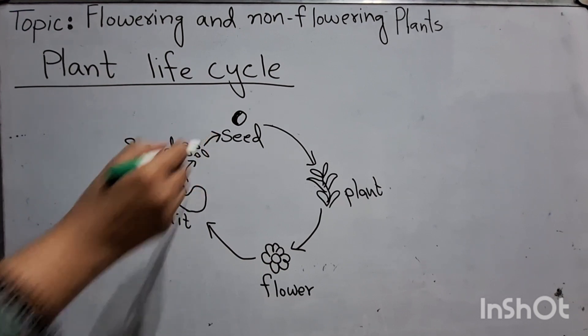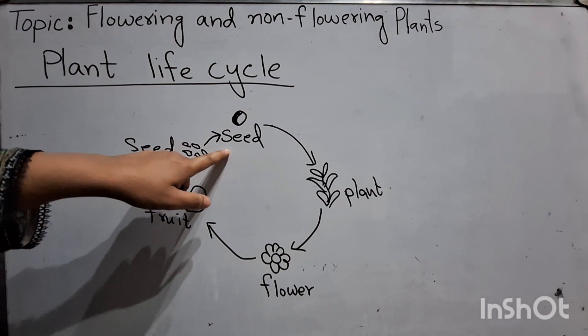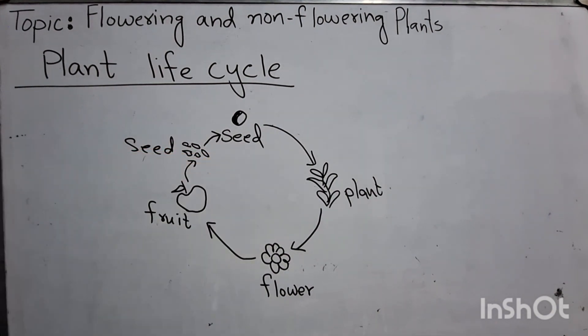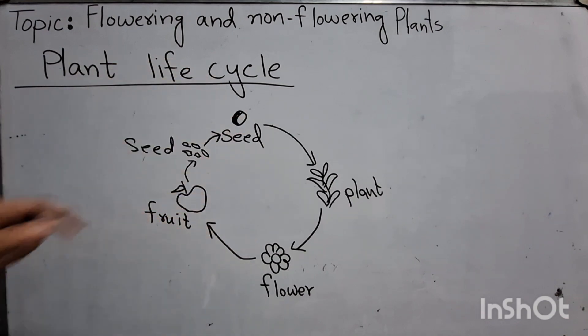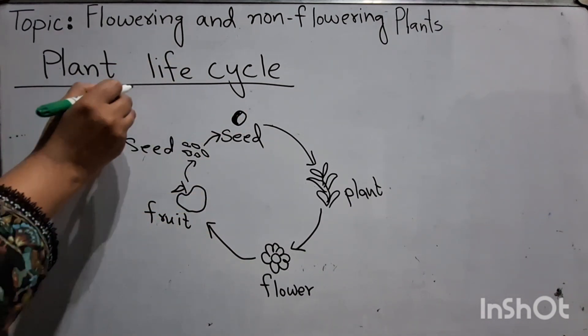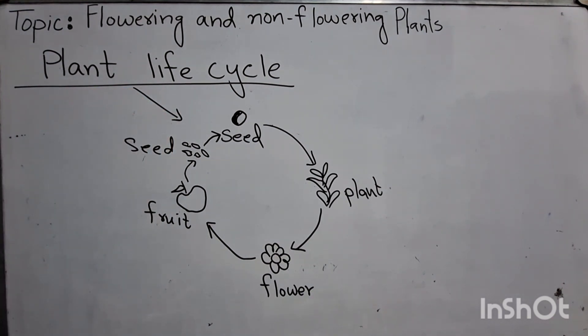And then seed germinates and grows new plant. This process is called plant life cycle.